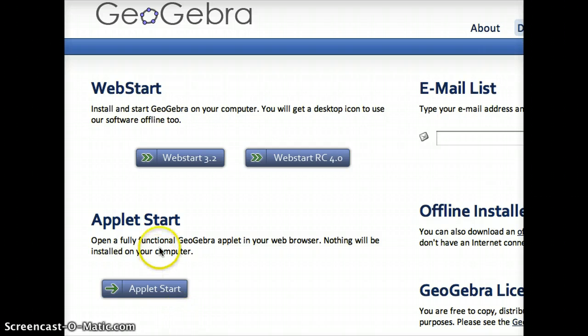The button that I want to press depends on how I want to set this up. If I do the web start, what this will actually do is install GeoGebra on my own computer, so that if I'm in a place without internet access, I can run GeoGebra without being online.